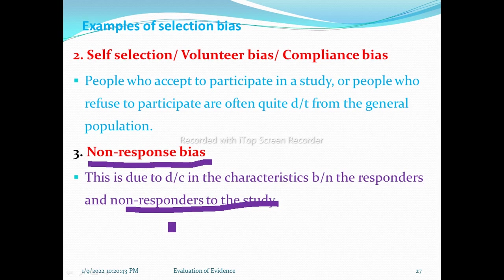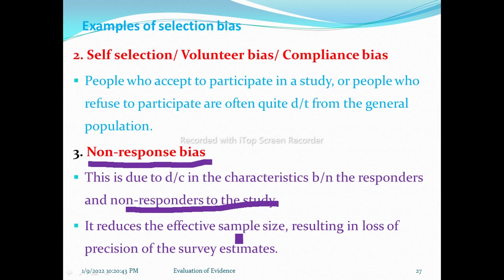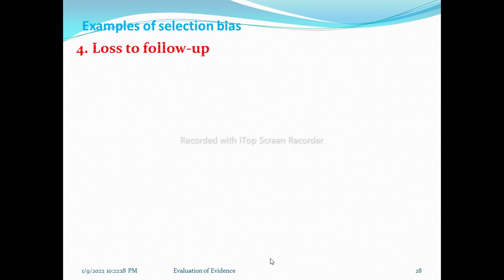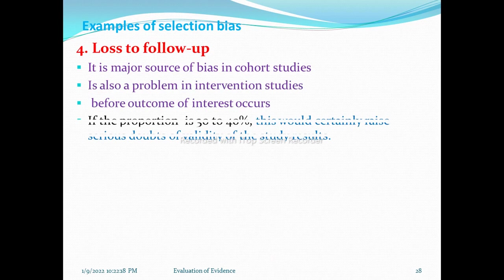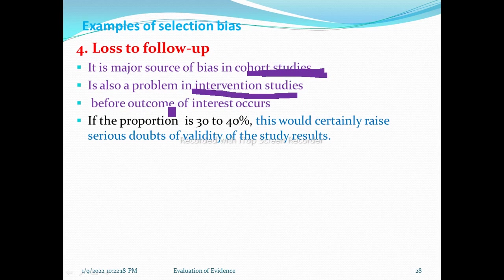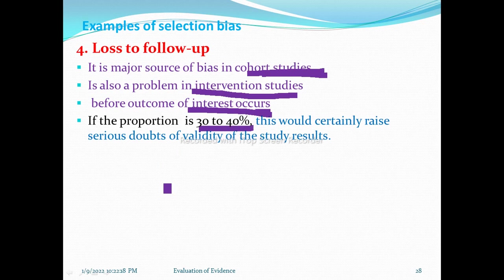Non-response is especially problematic when it is related to the exposure or outcome of interest, as it reduces the effective sample size and results in loss of precision. The fourth type of selection bias is loss to follow-up, a major source of bias in cohort studies and experimental studies. It is especially problematic when it occurs before the outcome of interest, and when loss to follow-up exceeds 30–40%, it raises serious concerns about study quality. It should be kept below 25%.